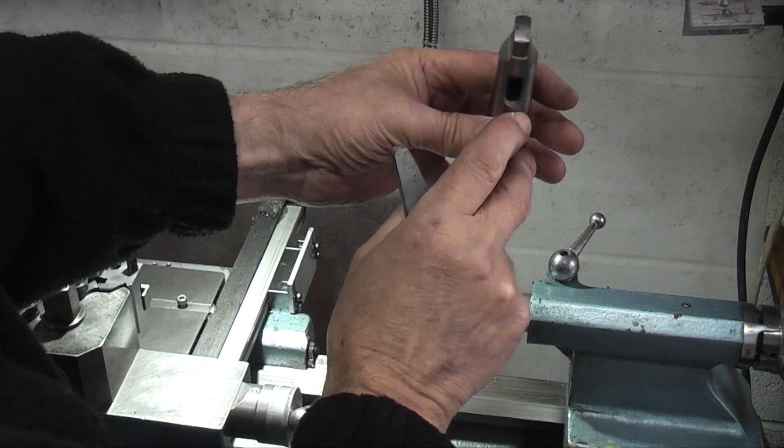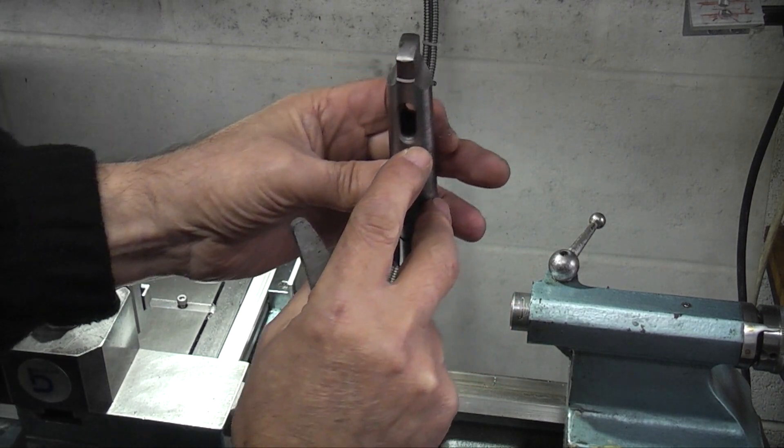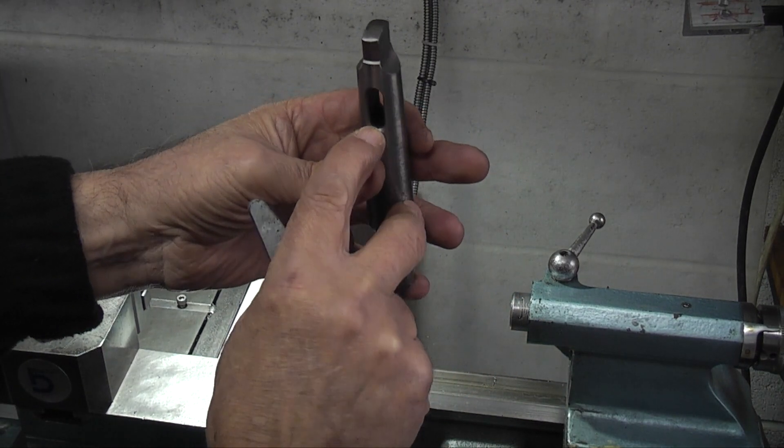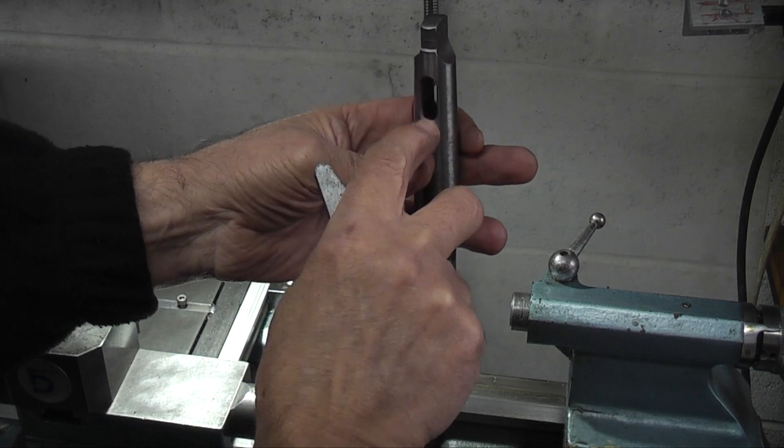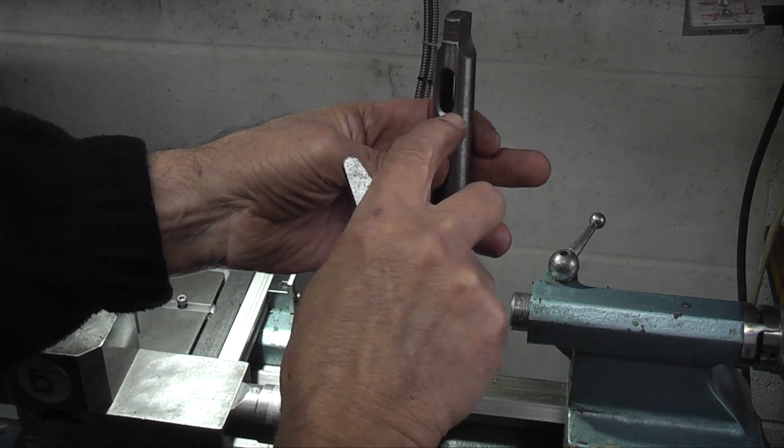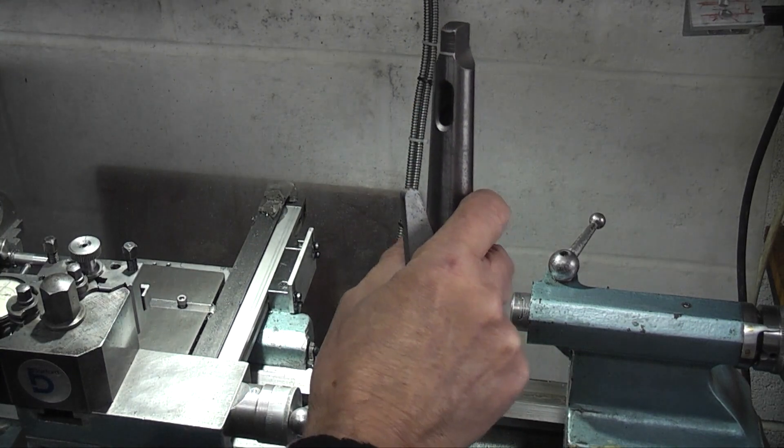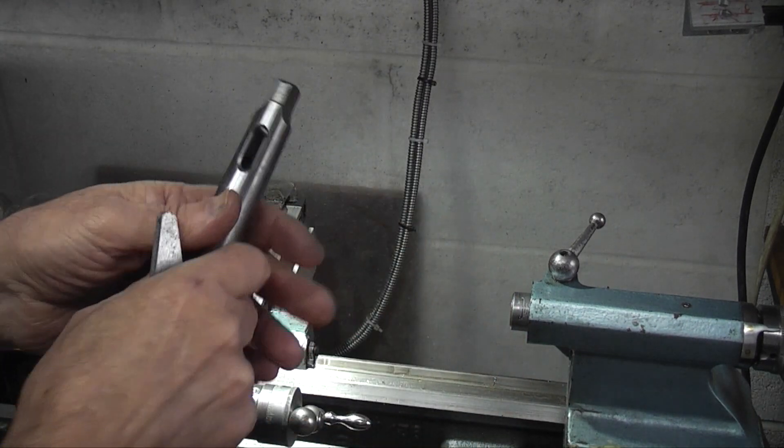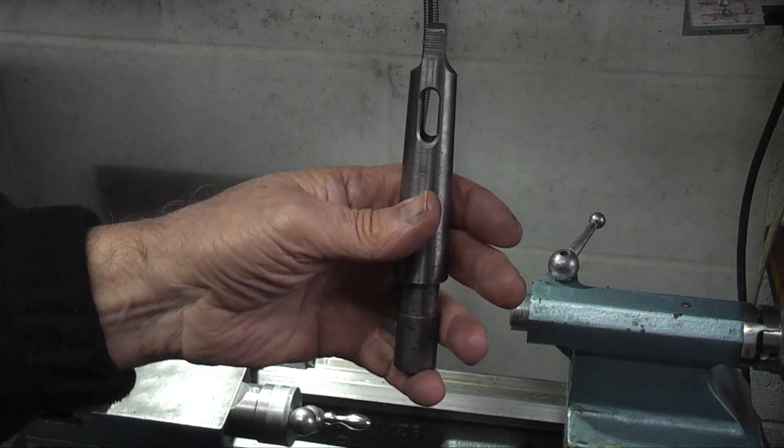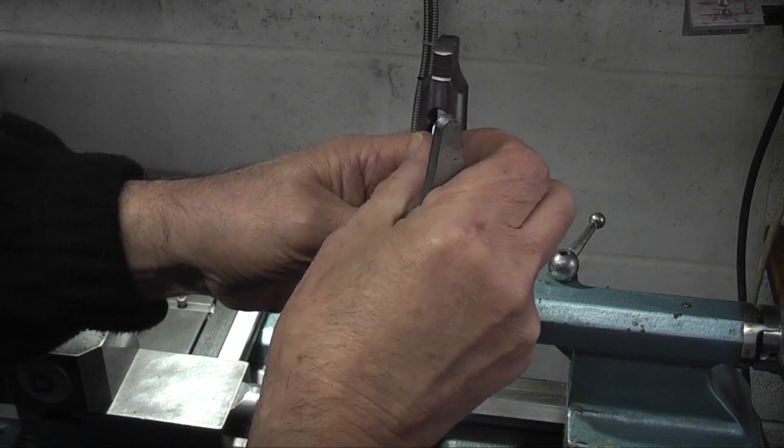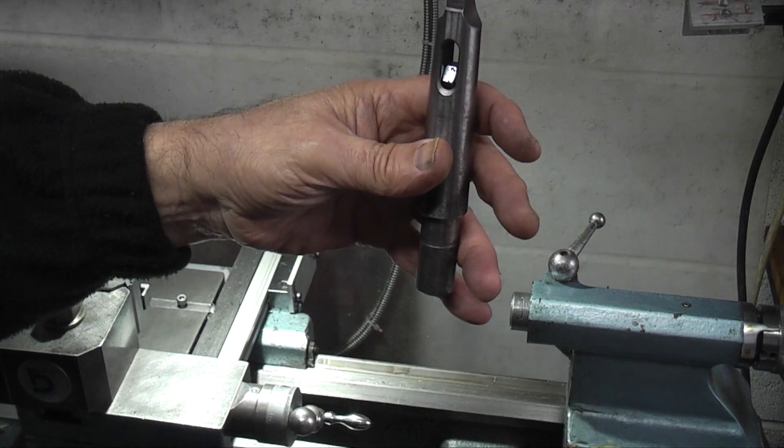If you have this problem where the end of the taper is below the slot in the morse taper sleeve, all you need to do is take a nut that fits into the slot like that.